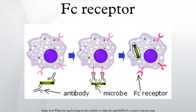FcεRI has a different function. FcεRI is the FC receptor on granulocytes, involved in allergic reactions and defense against parasitic infections. When an appropriate allergic antigen or parasite is present, the cross-linking of at least two IgE molecules and their FC receptors on the surface of a granulocyte will trigger the cell to rapidly release preformed mediators from its granules.